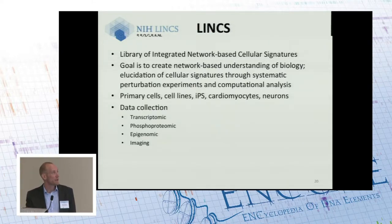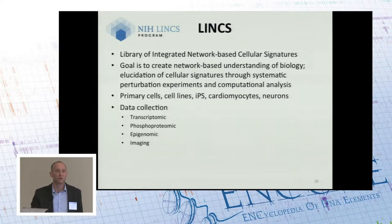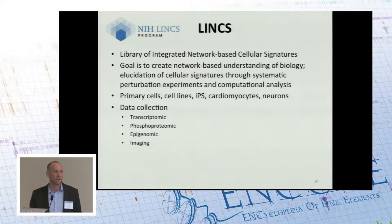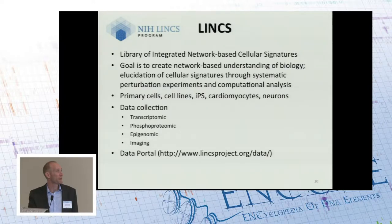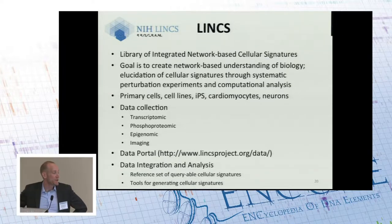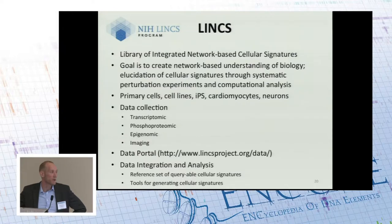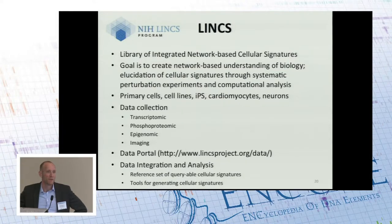They're collecting a number of different types of data: transcriptomic, phosphoproteomic, epigenomic, and imaging — a wide range of molecular and cellular phenotypes. It should be pointed out that they're not looking at all of these assays in all of the different samples. So the LINCS data cube is not uniformly dense — there will be a very deep number of assays in certain cell types but not others. Their data is available at the LINCS data portal, and a distinguishing feature of LINCS is that there is a concerted integration and data analysis effort aimed at deriving these cellular signatures, which are queryable online at the LINCS portal. They're also generating tools so that community data sets can be used to inform about additional cellular signatures.